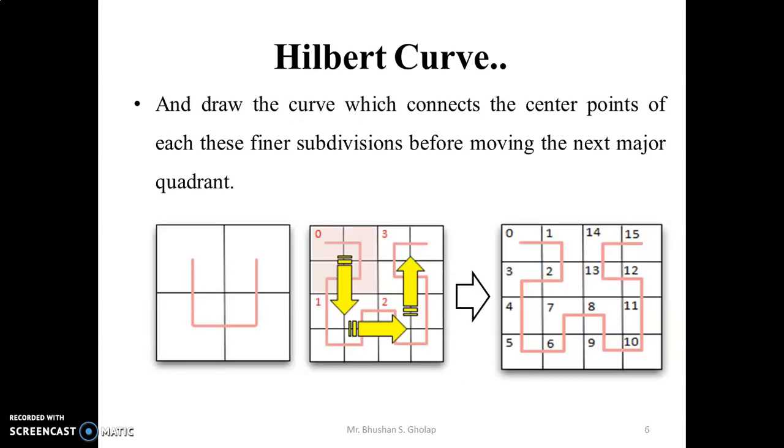And after that, we draw the curve which connects the center points of each final subdivision before moving to the next major quadrant. This diagram shows us the first approximation, that is the initial one. This is the second approximation. In the second approximation, for each initial square, we again draw one square.